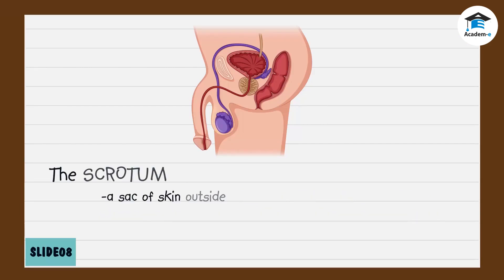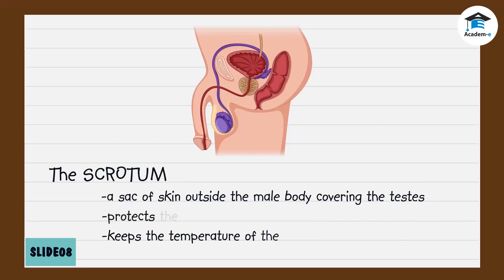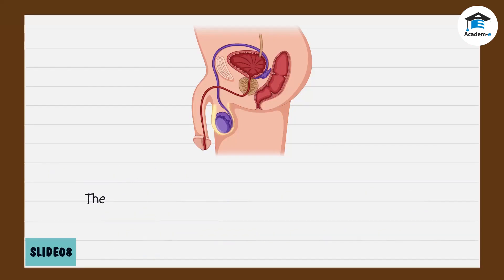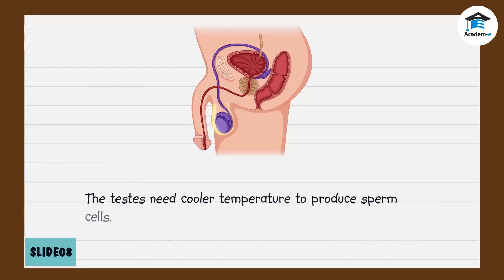Outside the male body, a sack of skin called the scrotum covers and protects the testes and keeps the temperature of the testes cooler than the rest of the body. The testes need a cooler temperature to produce sperm cells.